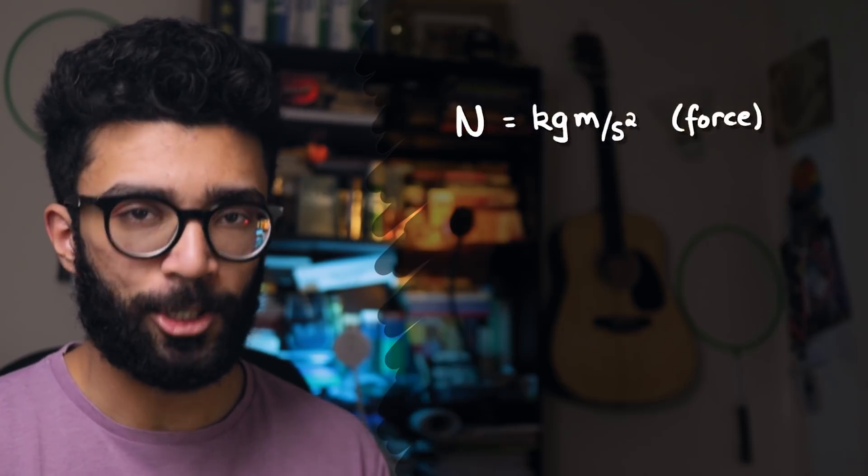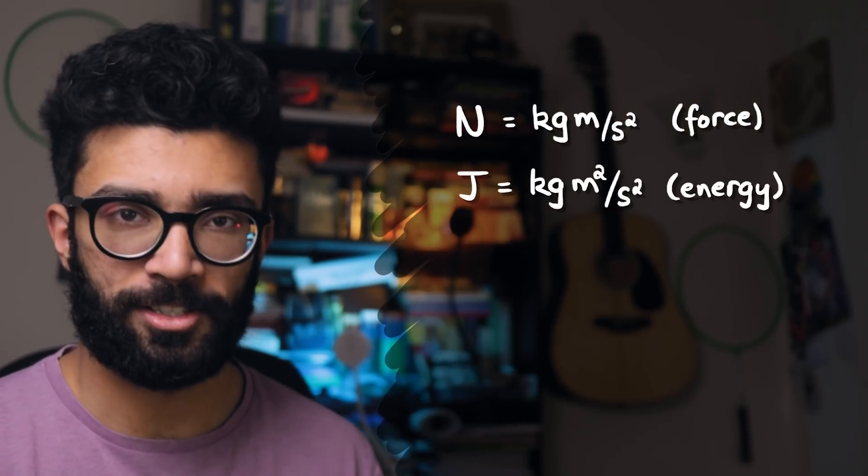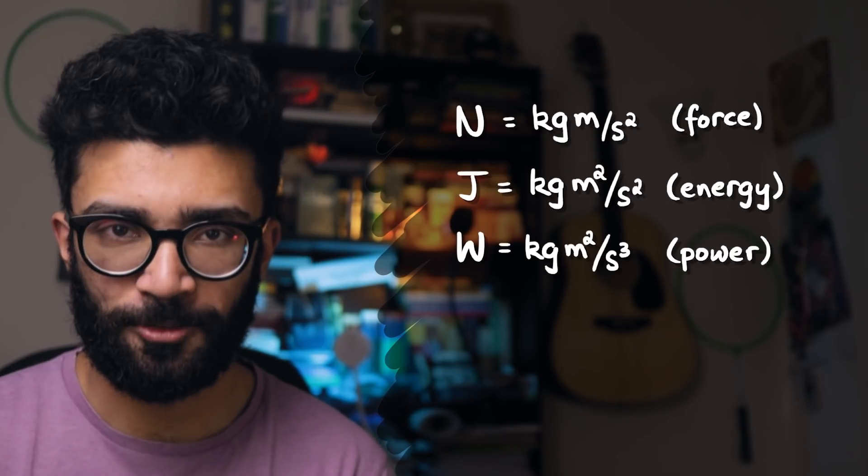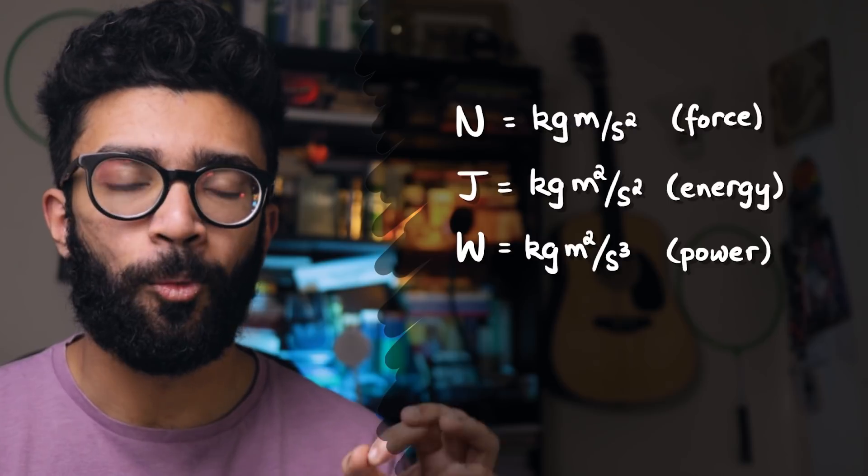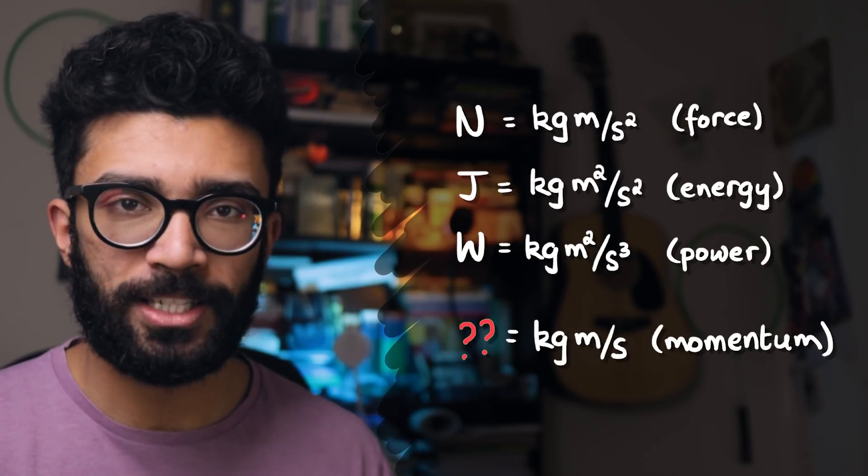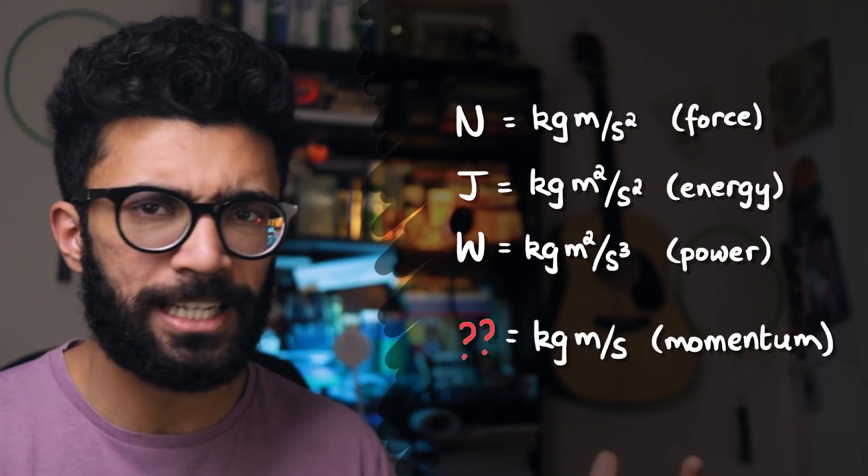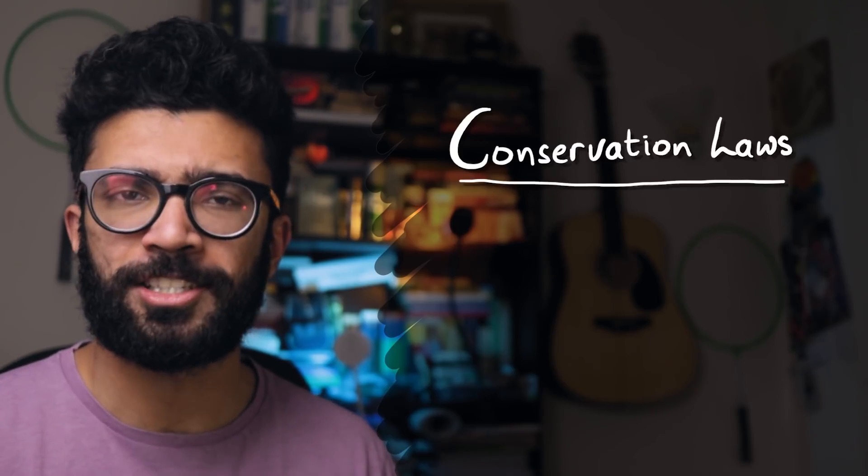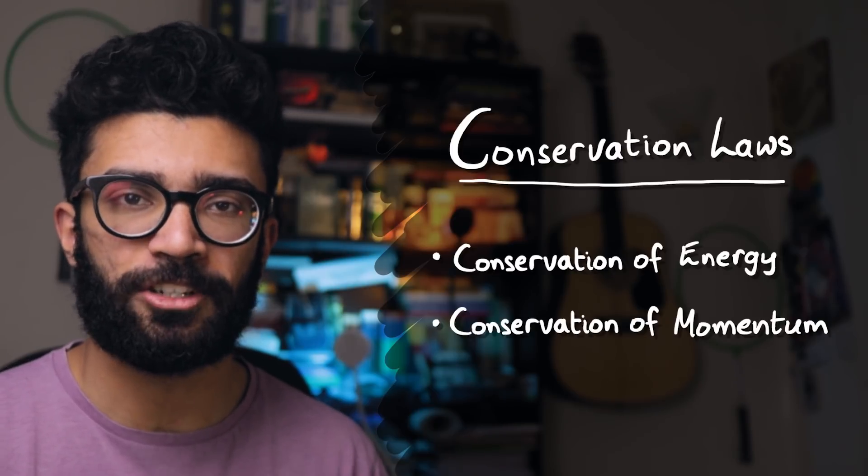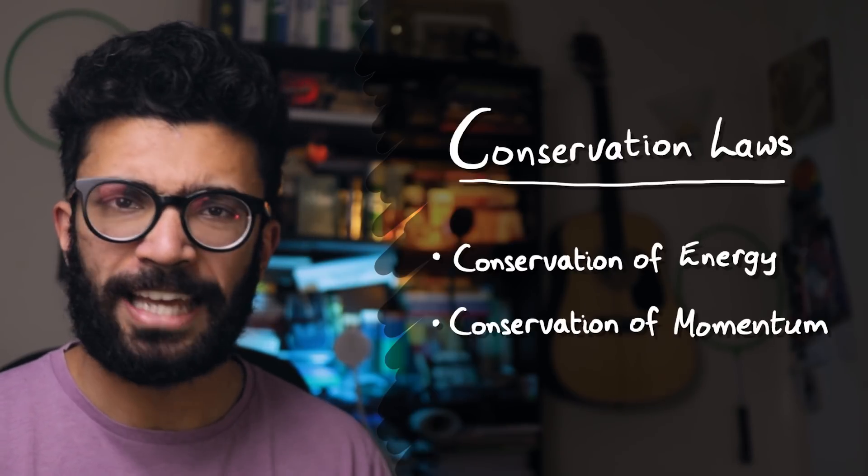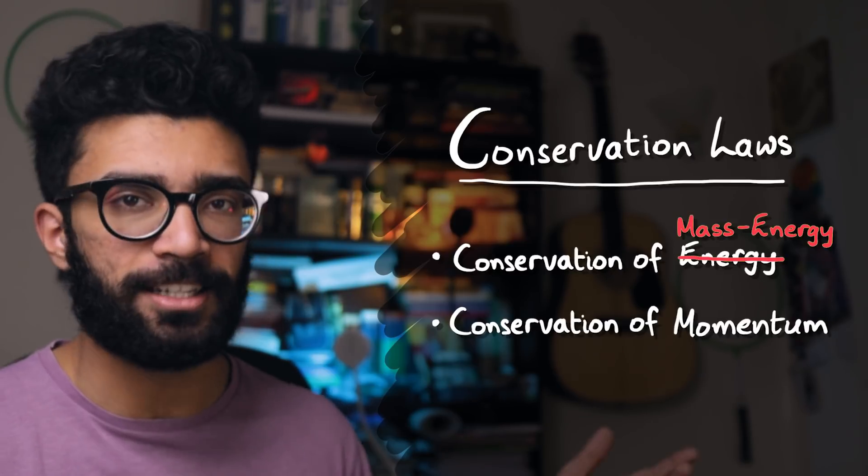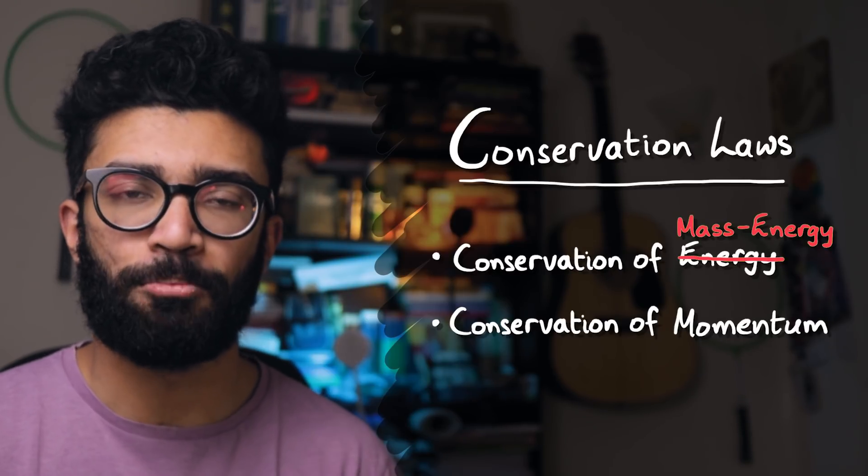For example, we have the Newton, which measures force, we have the joule, which measures energy, we have the watt, which measures power, and so on and so forth. But then this begs the question, why isn't there a specific unit for momentum, which is actually a really important quantity in physics? At high school level, we get taught two conservation laws in physics, the conservation of energy and the conservation of momentum. And the conservation of energy isn't even technically a thing, it should really be the conservation of mass energy, but that doesn't get mentioned until much later.